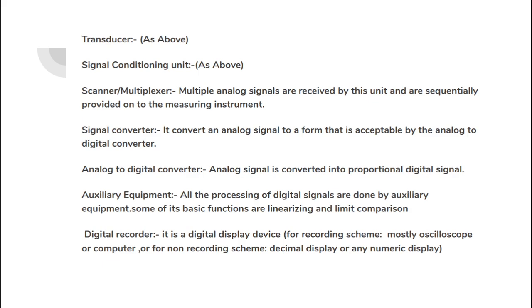The analog-to-digital converter, as the name suggests, converts the given analog signal to a proportional digital signal. We have auxiliary equipment, which is the core of the digital instrumentation system — it does all the processing work of the digital signal. At the end we have the digital recorder, which displays the data after processing. In most recording schemes, an oscilloscope or computer is the data recorder, whereas for non-recording schemes, a digital display or numeric display is used.